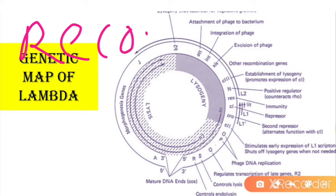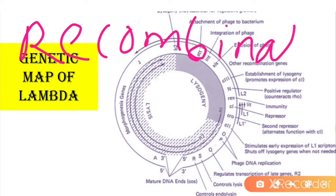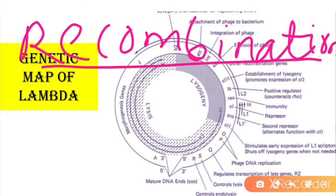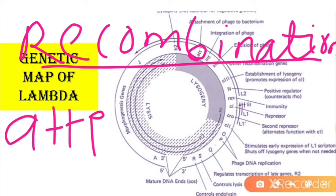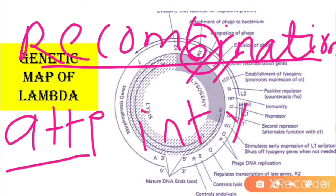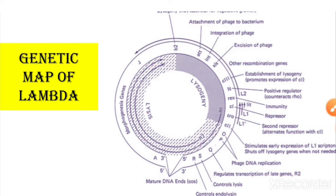Recombination is a very important part of lysogeny. Site-specific recombination occurs at the attP site. The genes int, xis, and gam — located at the attP site — are the three genes required for recombination.